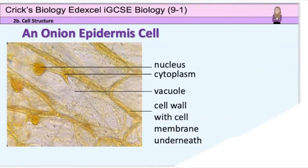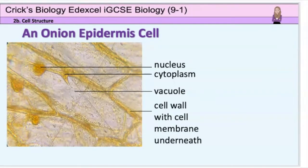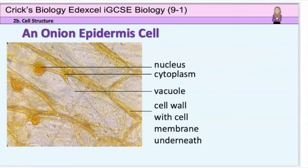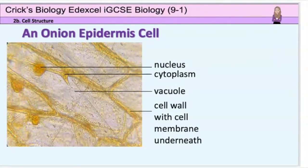This is a photograph of a slide with onion epidermis cells — in other words, onion skin cells — when observing them down a light microscope at a magnification of times 400. You can clearly see the cell wall with the cell membrane underneath, the large vacuole taking up most of the centre of the cell, the cytoplasm around the edges, and the nucleus, but again the mitochondria and ribosomes cannot be distinguished. There are no chloroplasts to be seen, as onion bulbs are found underground where there is no light, so no photosynthesis can occur.